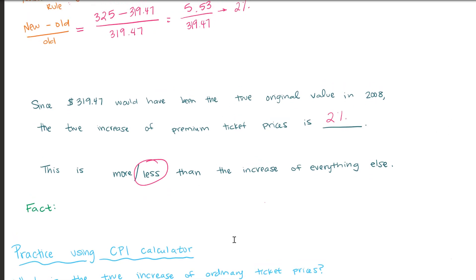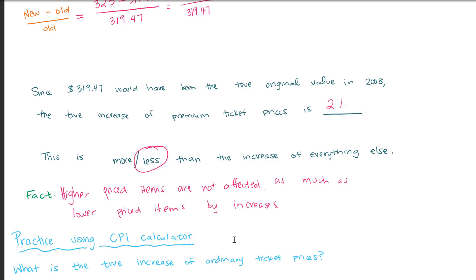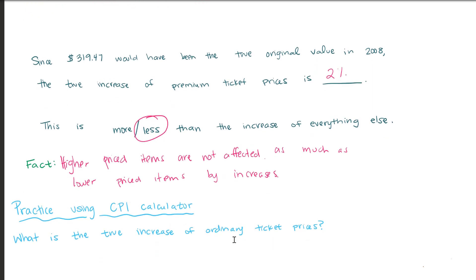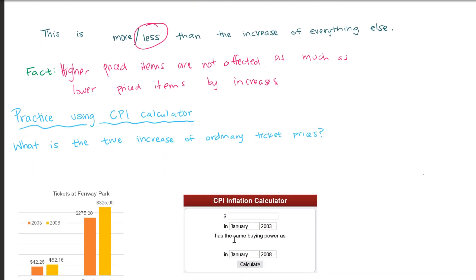And that is where we arrive at our fact. Higher priced items are not affected as much by increases. And we'll get to see that in the next example. So now let's repeat this same process, but for the ordinary seats so that we can practice using the CPI calculator and also see how much these lower priced items were affected by increases.